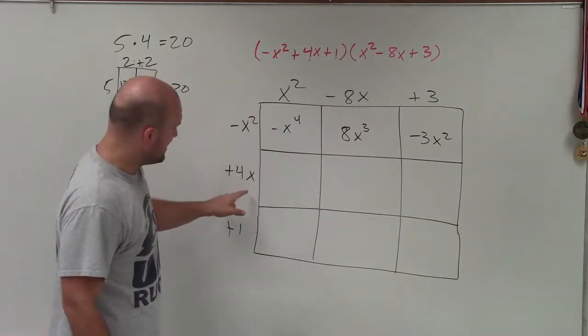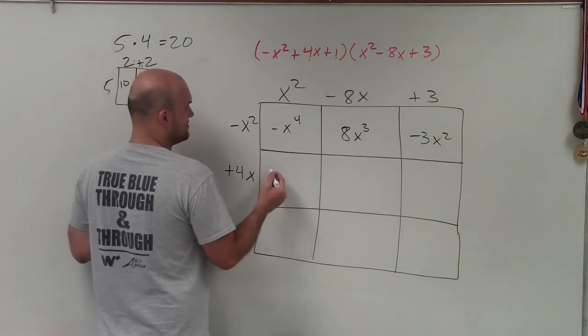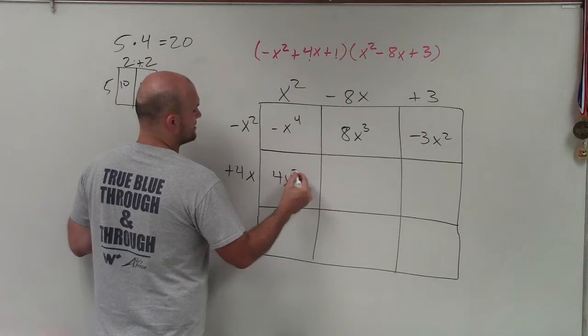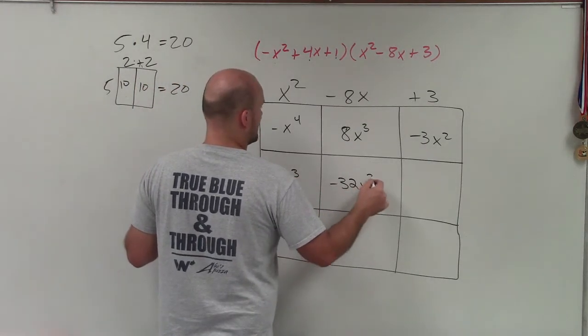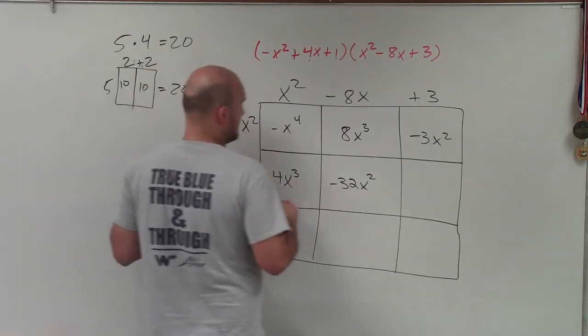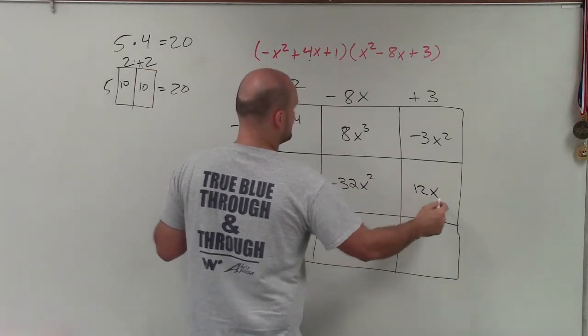Now we move on to this row. So I have 4x times x squared is going to be 4x cubed. 4x times negative 8x is going to be a negative 32x squared. 4x times 3 is going to be 12x.